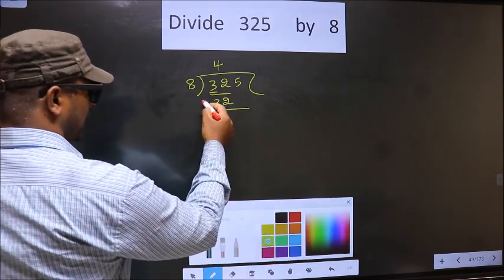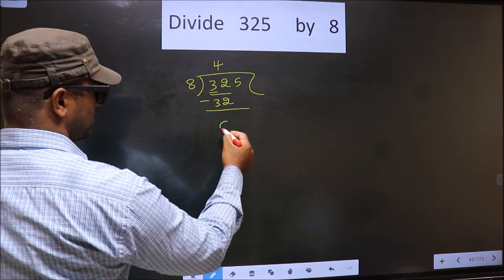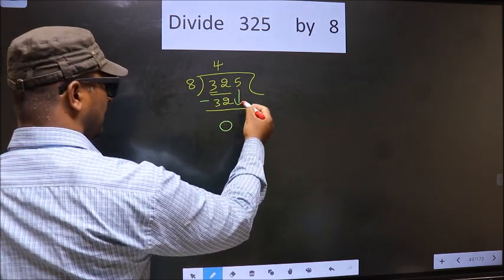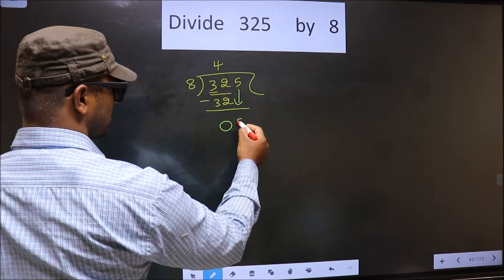Now you subtract. 32 minus 32 is 0. Now we bring down the beside number down. That is 5.